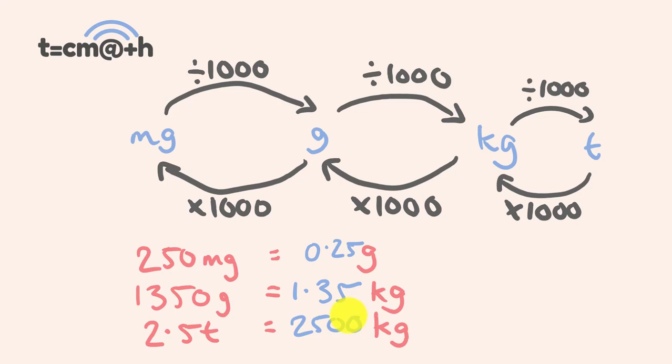That's how the metric system works. You can even think about computers — bytes, kilobytes, megabytes, gigabytes, terabytes — each time going up by a factor of 1,000. We can also go smaller and smaller: divide by 1,000 to get milli, divide by 1,000 again to get micro — like micrograms — and divide by 1,000 again to get nanograms, and so on and so forth.